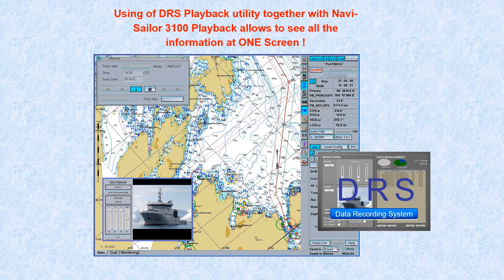Software is available for some ECDIS systems which provides voyage data recording capability without the need for operator action. The captured data can be replayed for analysis, training, or presentation. Typically this data is GPS, gyro, and ARPA data, but may also include the speed log. The data is automatically recorded, compressed, and encrypted in one-hour chunks, with settings applied to automatically delete the oldest data after a defined interval — normally about a month.